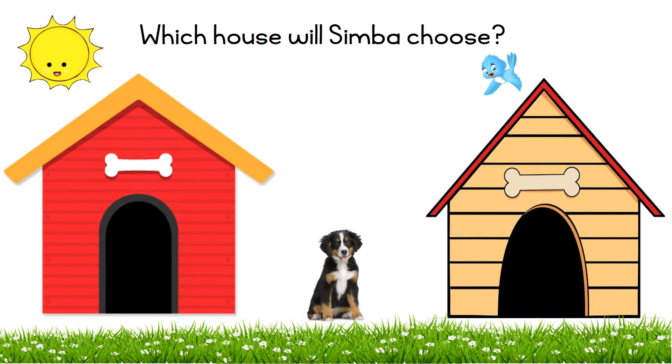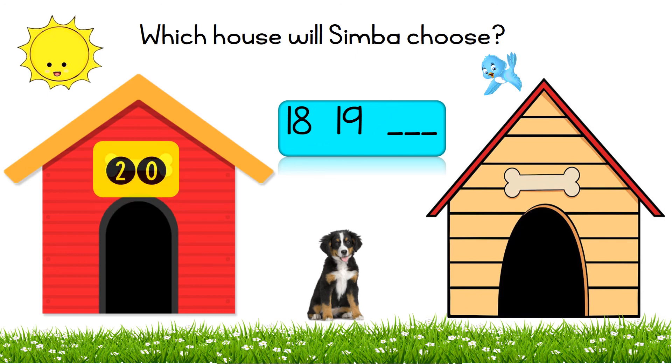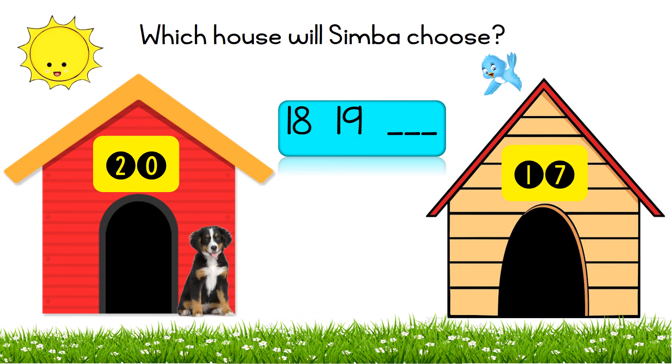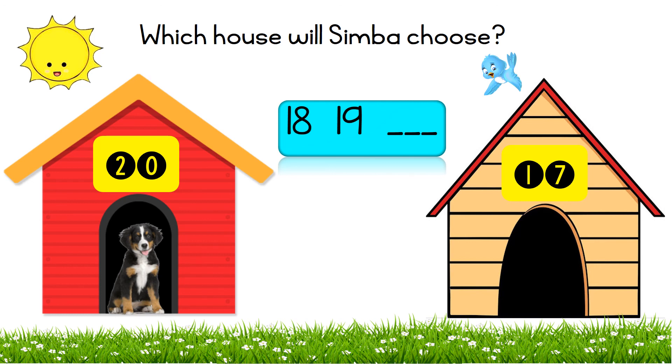Simba! Which house will Simba choose? Eighteen, nineteen, blank. Simba has to choose the house that comes after eighteen and nineteen. Great! If you said twenty, you are correct. Simba chose house number twenty because twenty comes after eighteen and nineteen. Good job!